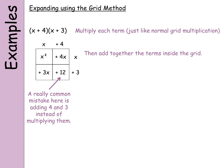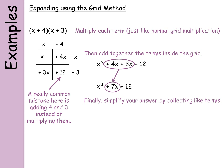All you do then is add together the terms inside the grid. So I've got x squared plus 4x plus 3x plus 12. What I need to do then is simplify my answer — I can collect together everything that's got x's in. I can't collect x squared with x because they're not like terms, so I put 4x and 3x together to give me 7x. My final answer is x squared plus 7x plus 12.